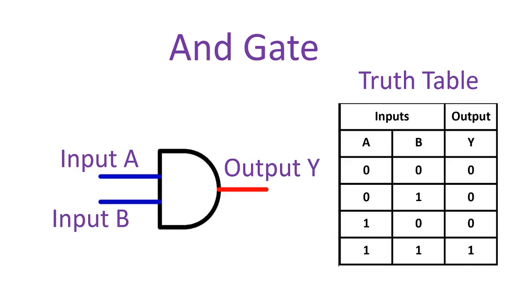If we are going to look here on the truth table, input A is 0, input B is 0, output is 0. Input A is 0, input B is 1, output is 0. Input A is 1, input B is 0, output is 0. Input A is 1, input B is 1, output is 1.